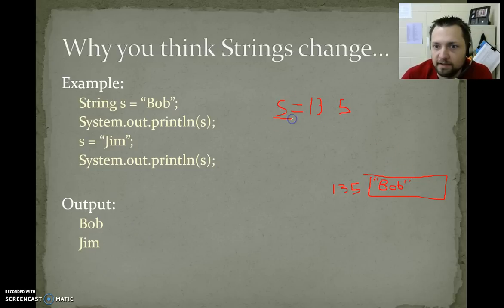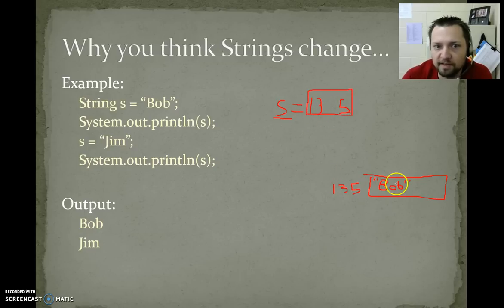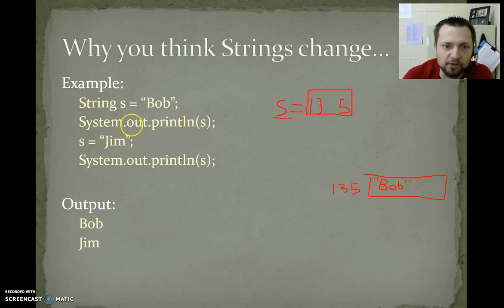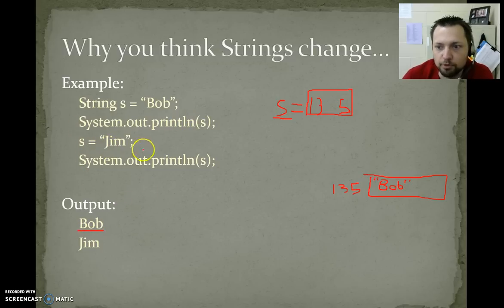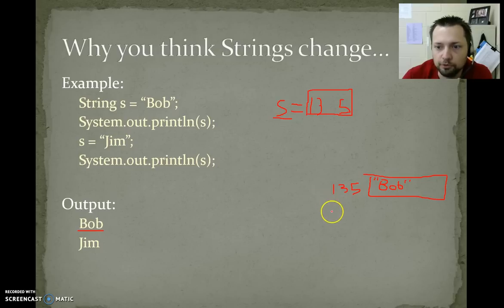S is a variable that can contain a string, but a string is an object, so it stores the memory address 1, 3, 5. At 1, 3, 5 we have Bob. So when we System.out.print s, Bob gets printed to the screen. If we say s equals Jim, what's really happening — this is shortcut for new string.